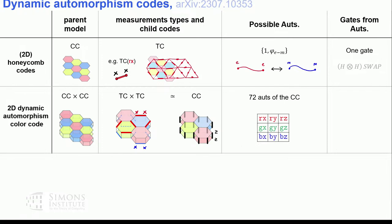To get the Clifford group, we use a color code with boundaries — specifically a triangle with Pauli boundaries defining a single logical qubit — and stack them on top of each other. We need one additional entangling gate between pairs of triangles, which requires three-qubit measurements to couple different layers at one of the edges. With this, we can do automorphisms corresponding to the entire Clifford group of logical operations. That concludes the dynamic color code in two dimensions.